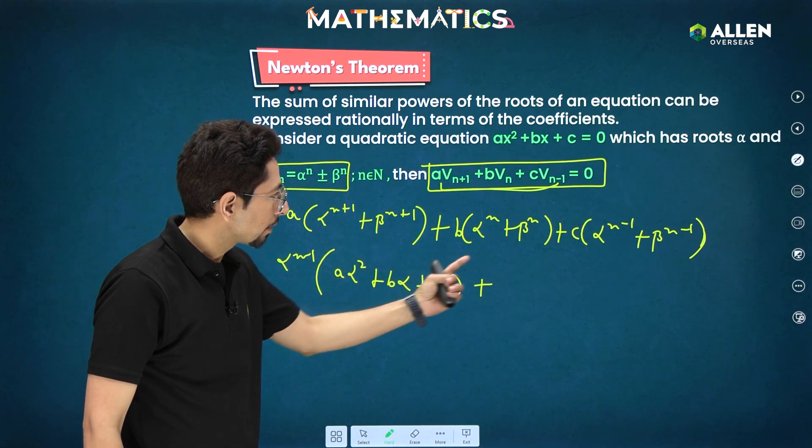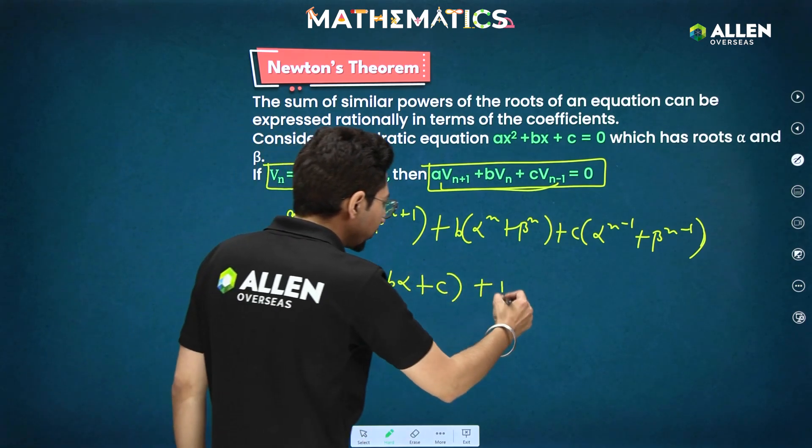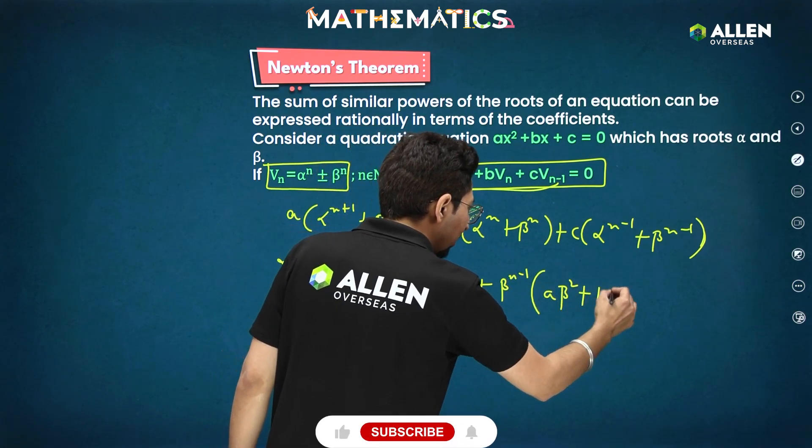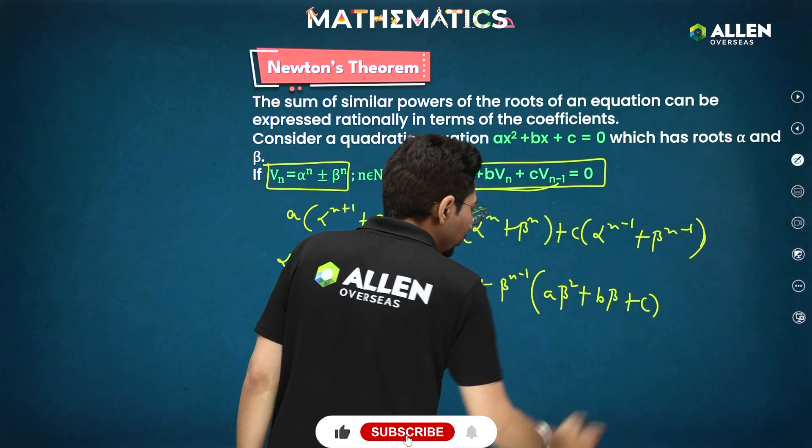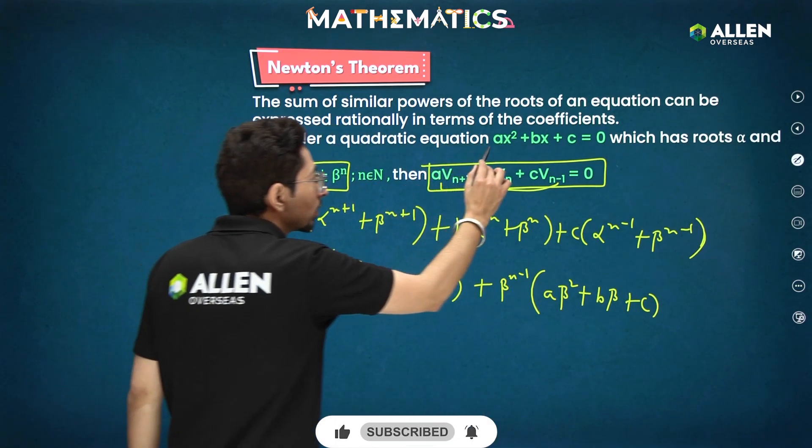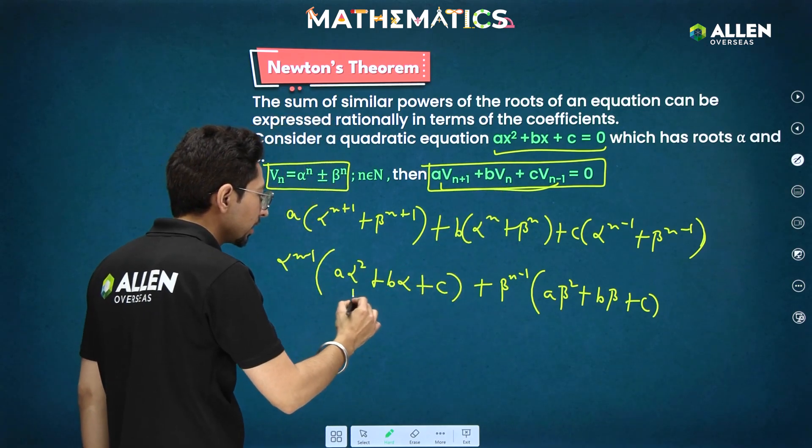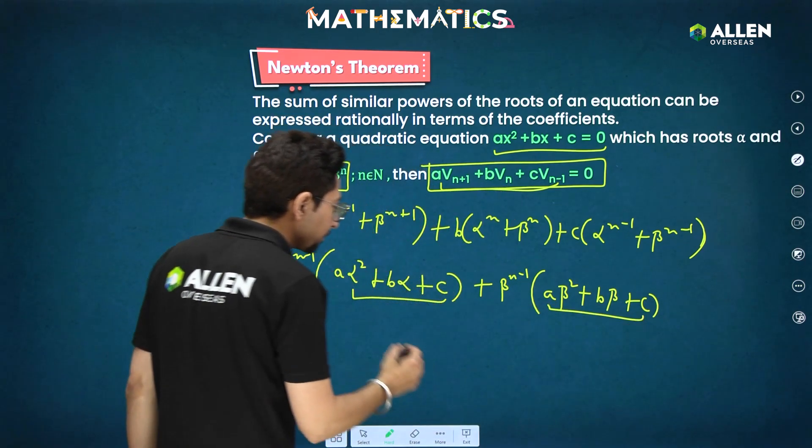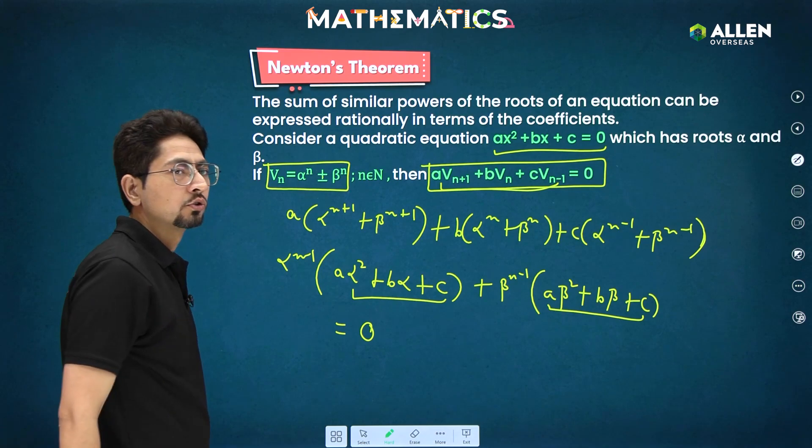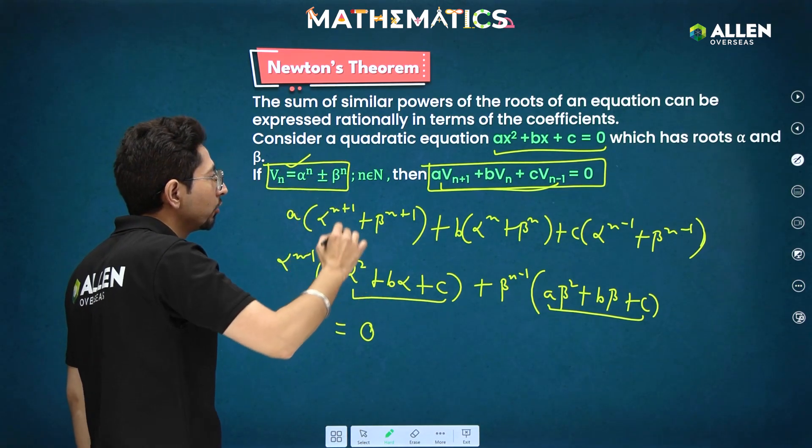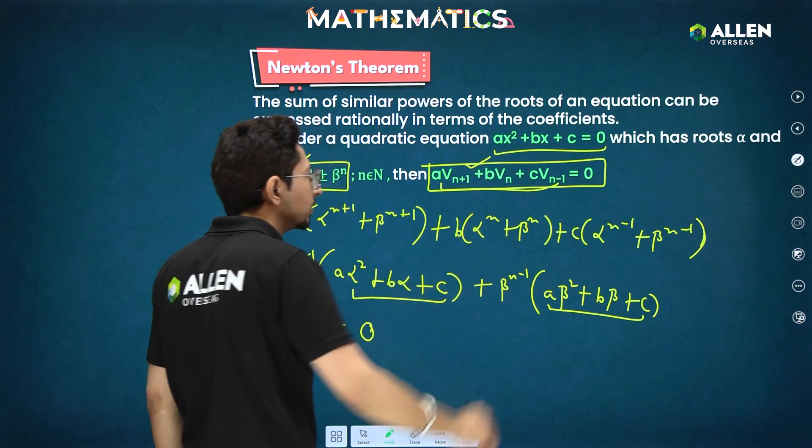Similarly, beta we can take beta power n minus 1. Same coefficient you will be getting for this one also. That is k beta square plus b beta plus c. And you clearly know that alpha beta are roots of this equation. So alpha beta both satisfy this equation. So this part is 0 as well as this part is 0. Entirely that is 0. So you simply have to remember, if this kind of relation is given in the equation, you directly have to apply the Newton's theorem.